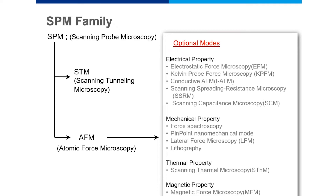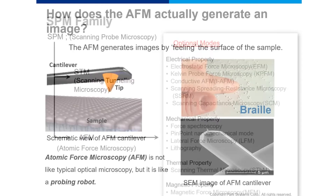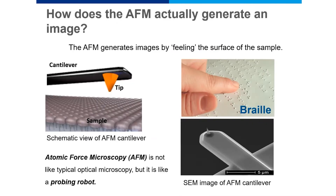My first question to everybody is: how does an AFM actually generate an image? Since we are looking at the basics of AFM, we should always ask this question. The simplest answer is that the AFM generates images by feeling the sample surface. On the left-hand side you can see an image of a tip and a cantilever.